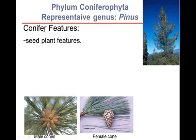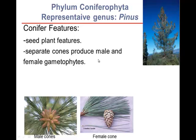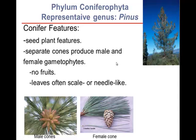Conifers have all the seed plant features as well as the general plant features. They produce separate male and female cones that produce male and female gametophytes, and they have no fruits. The leaves are often reduced to be scale- or needle-like, because conifers often live at higher elevations where precipitation falls as snow. Although there may be many feet of snow, the soil can be extremely dry underneath because moisture is frozen, so conifers must survive with very little available moisture, preserving it by reducing leaf surface area.